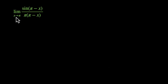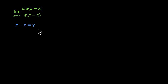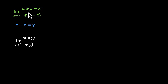Here's the next one: limit x approaches π, sin(π - x) / (π times (π - x)). We can use substitution here. Inside the sine, we have π - x. Let's treat that as a different variable: let π - x = y. This makes x = π - y. So wherever we see x, we replace it with π - y. X approaches π means y approaches 0. So limit y approaches 0: sin of (π - x), that's y; π times (π - x), that's π times y.